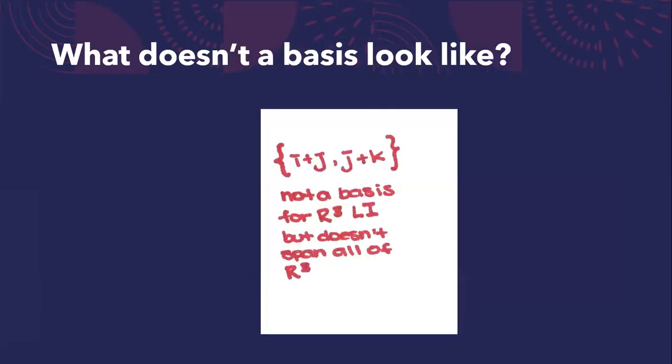What doesn't a basis look like? The collection {i + j, j + k} is not a basis for R³. Although it is linearly independent, it does not span all of R³. For example, there exists no linear combination of i + j and j + k that equals i + j + k.